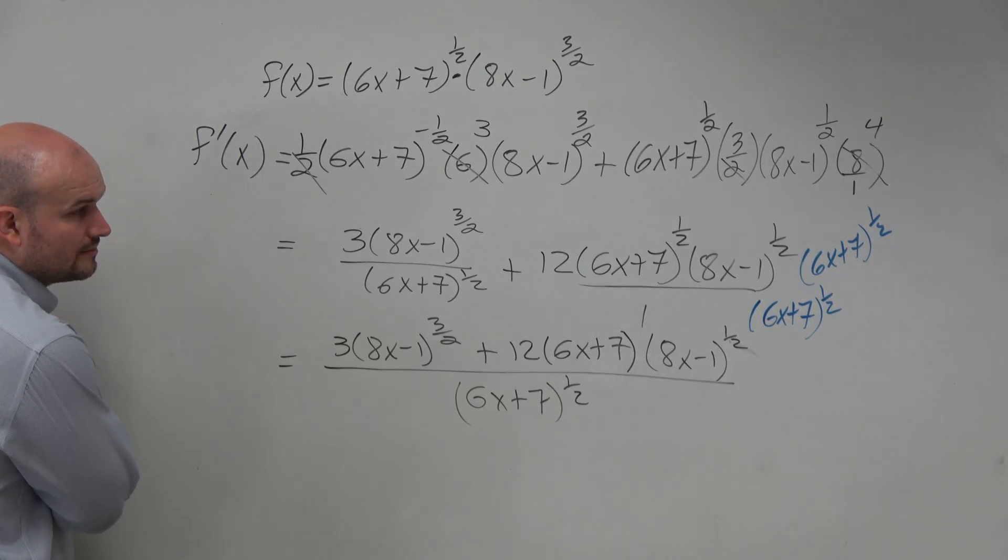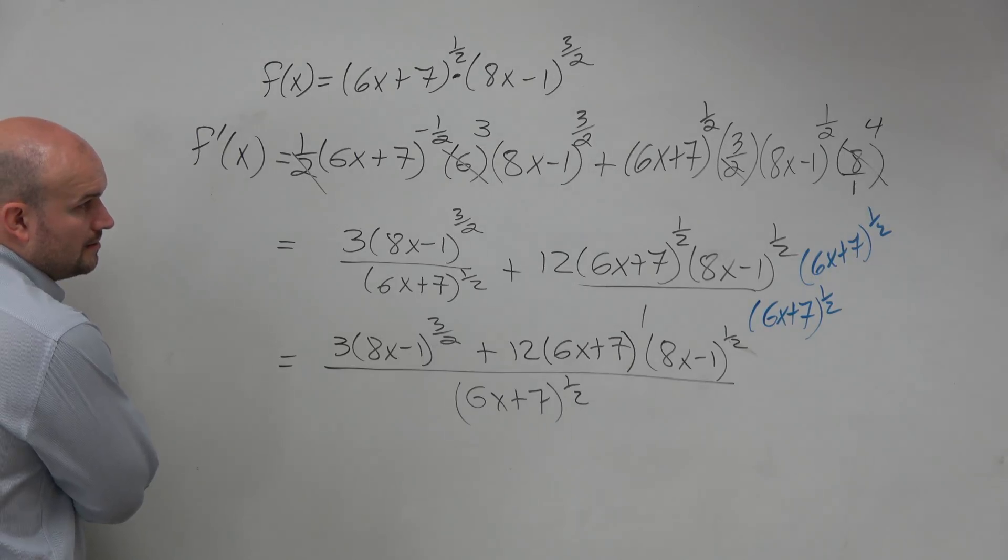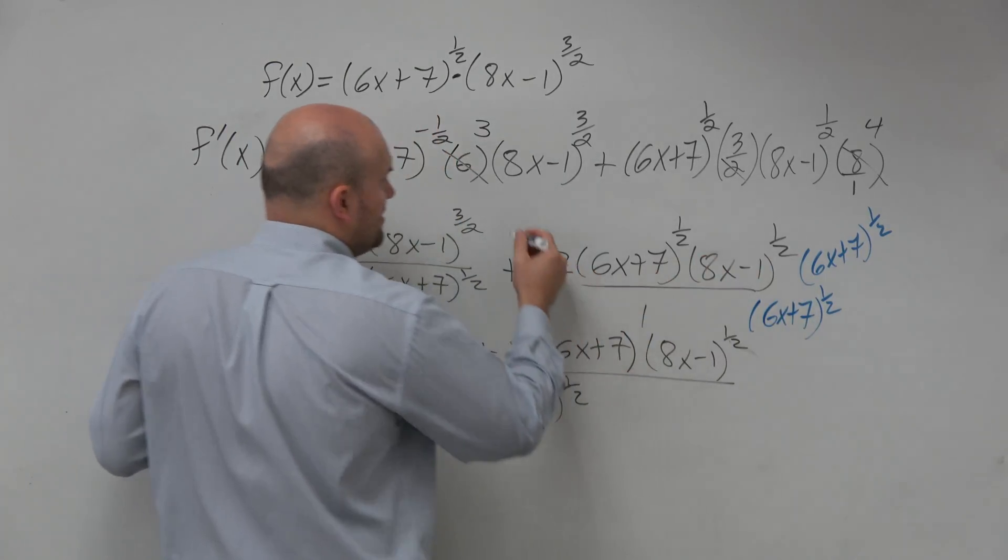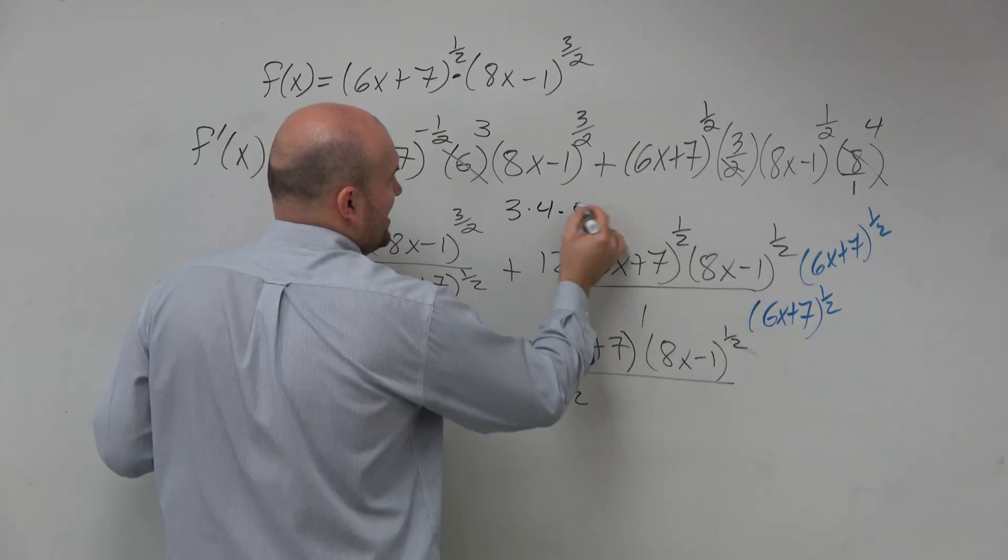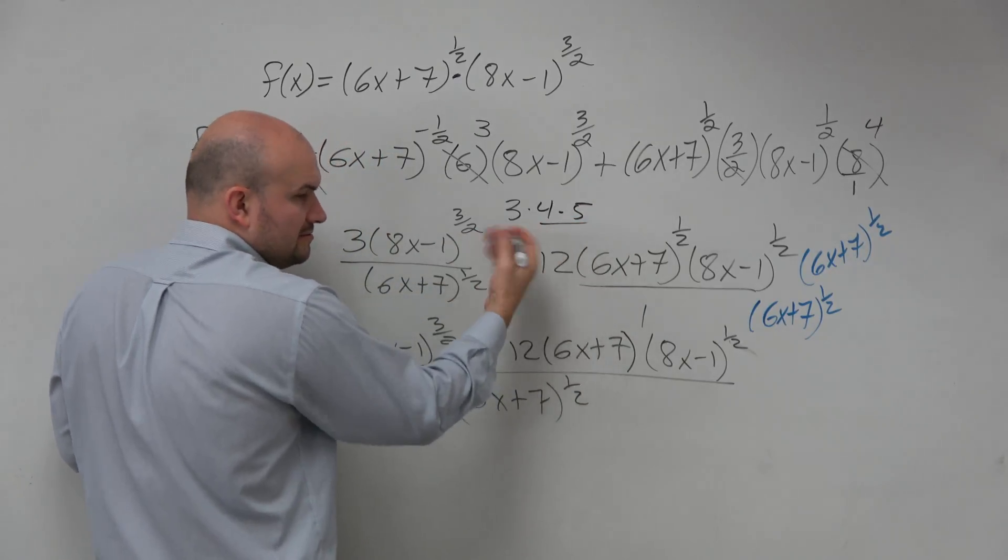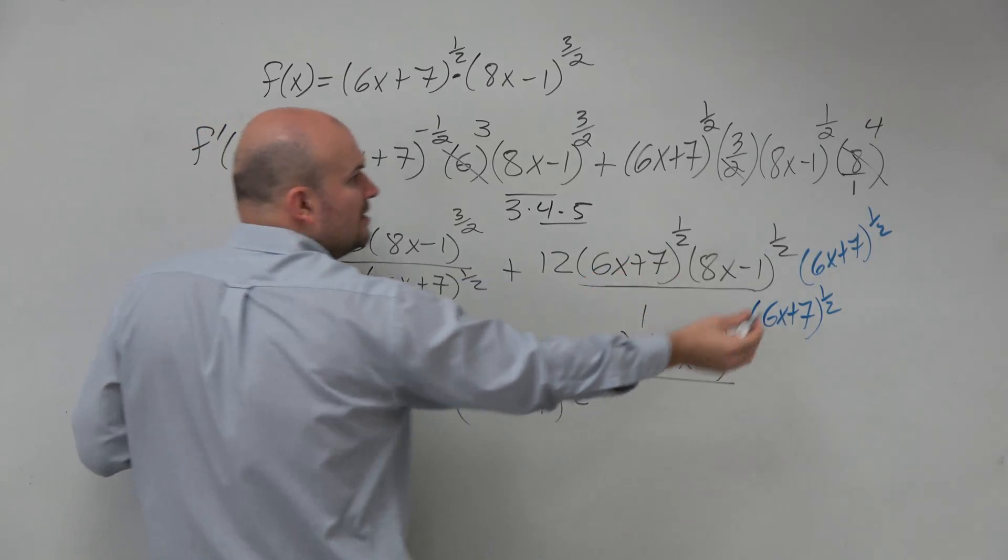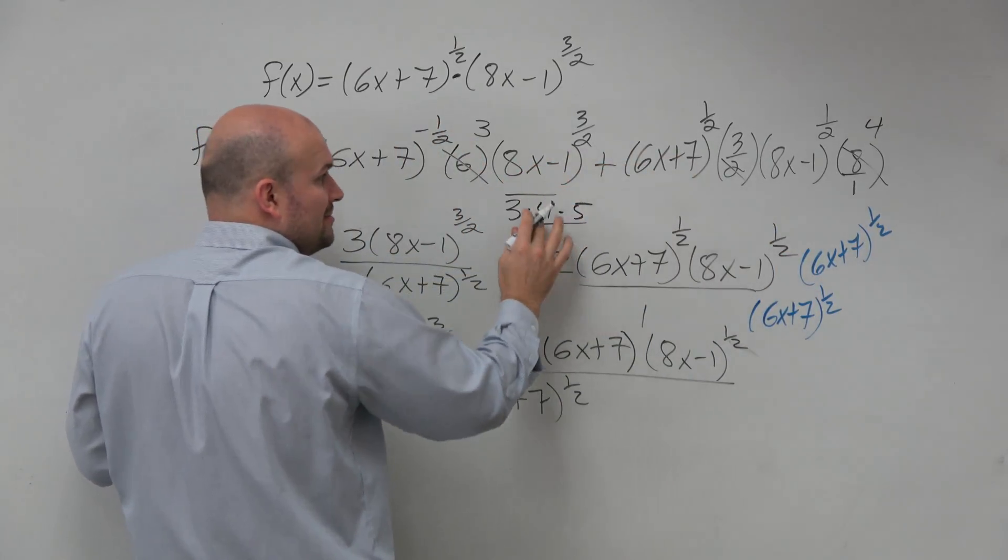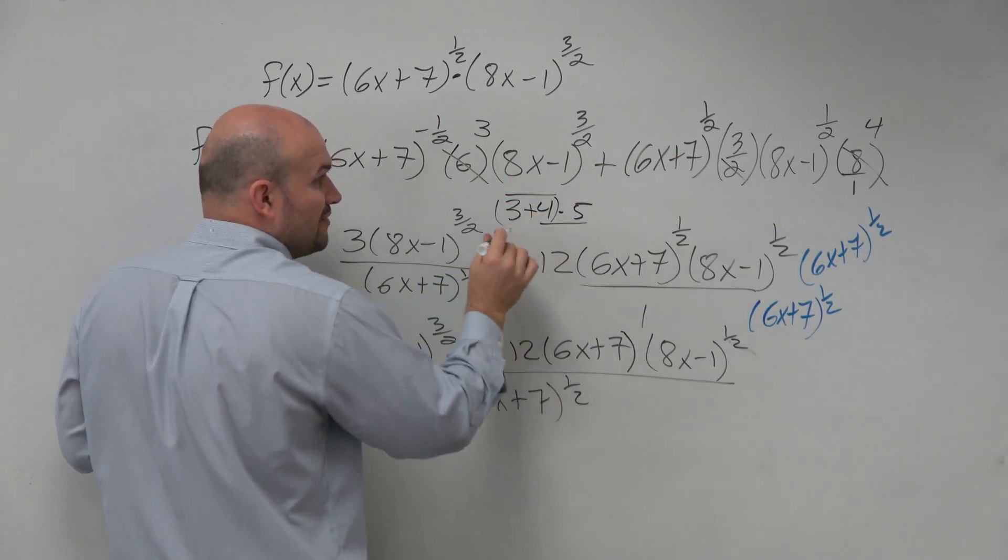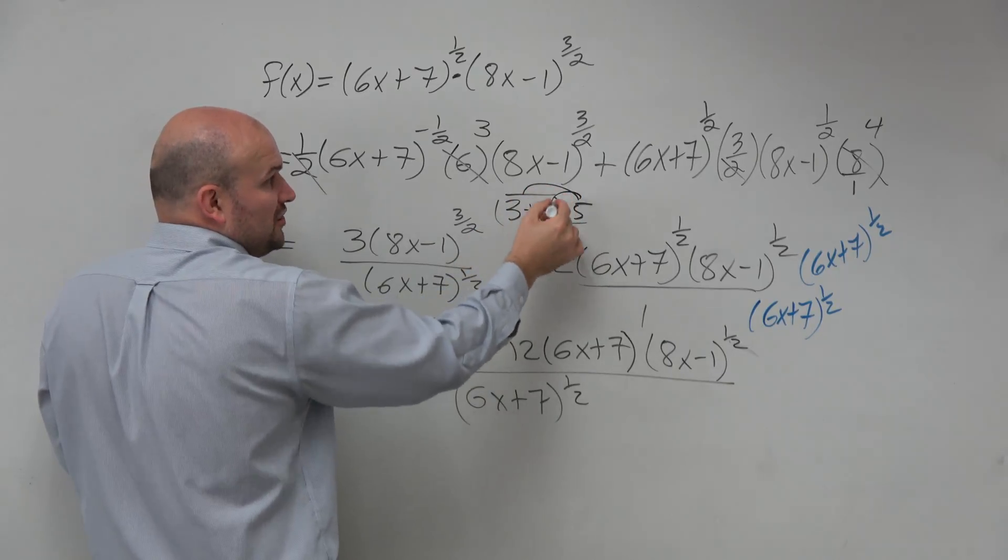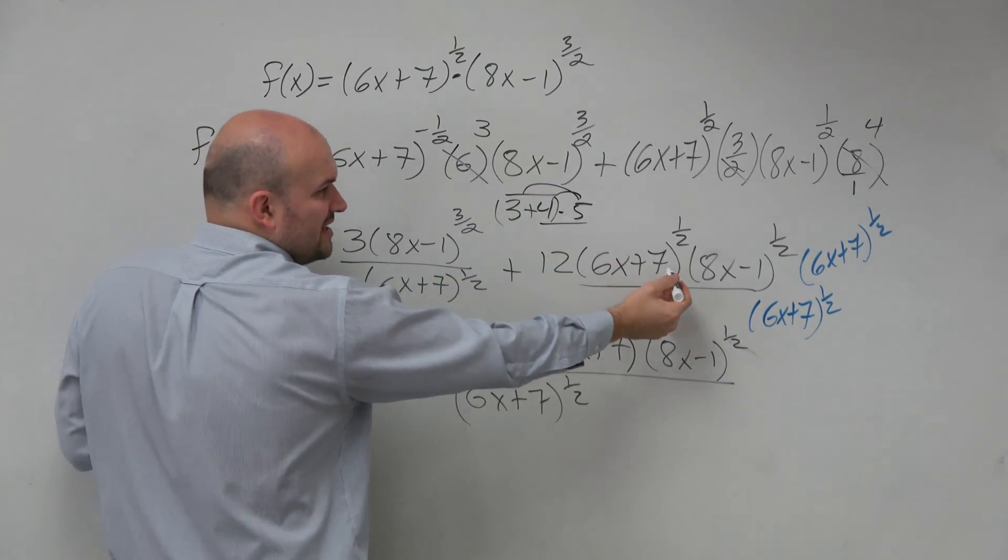When you multiply the 6x plus 7 to the 1/2, did it go to both? Yeah, I mean, well, I remember if you have like 3 times 4 times 5, you just multiply, you know, it doesn't matter which ones you multiply. You're just multiplying across, right? So it's not like distributed property because, yeah, if you had addition, then you'd have to multiply to everything. But we don't have addition. We just have multiplication.